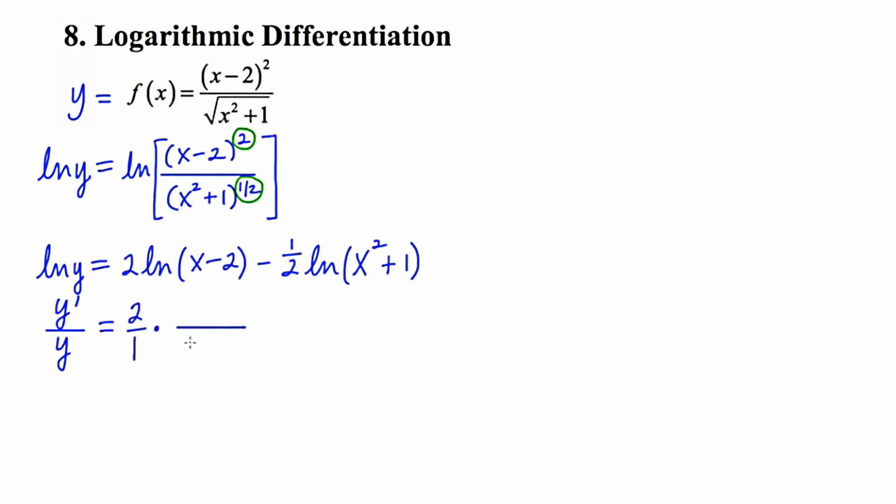Now, the argument goes in the denominator, and its derivative goes in the numerator. Now let's travel to the third term. The argument goes into the denominator, and its derivative goes into the numerator. Now let's look for opportunities to cancel out. And I notice that there's a 2 here and a 2 here, so they're going to cancel out. So now I'm going to clean this up a little bit further. My first fraction can be consolidated into 2 over x minus 2. And my second fraction can be consolidated as x over x squared plus 1.